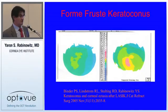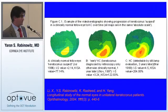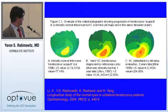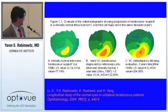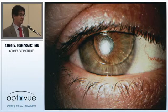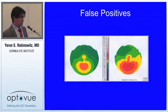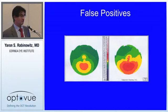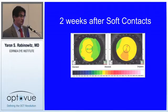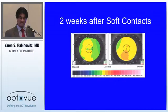We labeled this pattern form fruste keratoconus, and over time showed that it goes on to develop keratoconus. In a paper published in Ophthalmology we looked at fellow eyes of patients with unilateral keratoconus, showing how inferior steepening and skewed radial axis proceeded to clinically obvious keratoconus. There are things that can mimic keratoconus suspect, such as hard contact lens wear. A soft contact lens wearer rejected for refractive surgery showed nearly normal topography after eight weeks out of lenses — even soft lenses can cause warpage for up to six weeks.